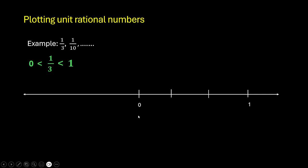Now 0 can be written as 0 by 3 and 1 can be written as 3 by 3. Now look at the number line — this is 0 by 3, so this will be 1 by 3 and this will be 2 by 3. Since we wanted to plot 1 by 3, we can highlight it using a full circle.